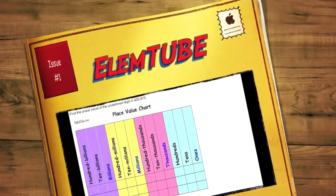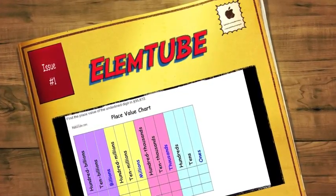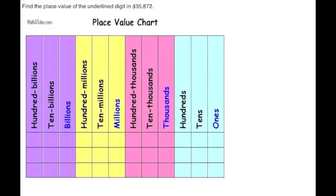Mr. Phil here, and I'm going to fill your head with place values today, so get ready and here we go. It says: find the place value of the underlined digit in 435,872. The underlined digit, if you can't see it, is right under the four here, so I'll just mark that. So what are you going to do now?